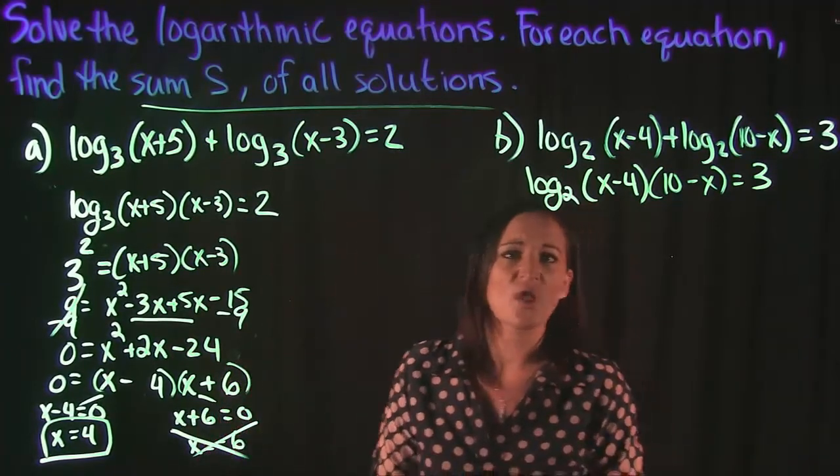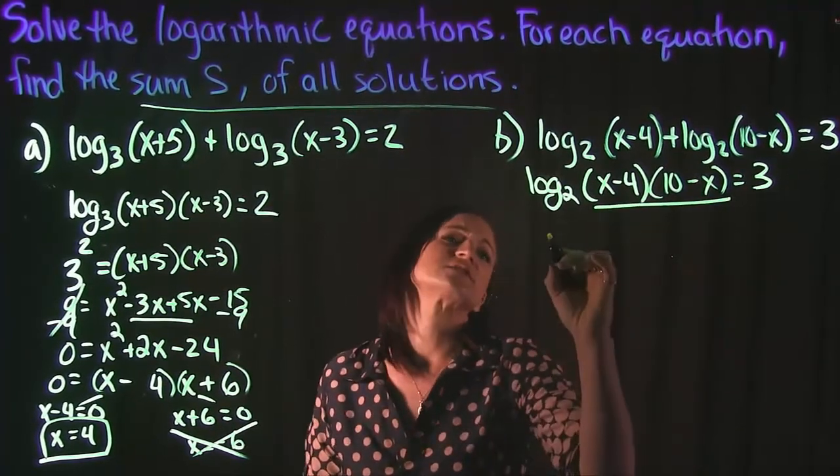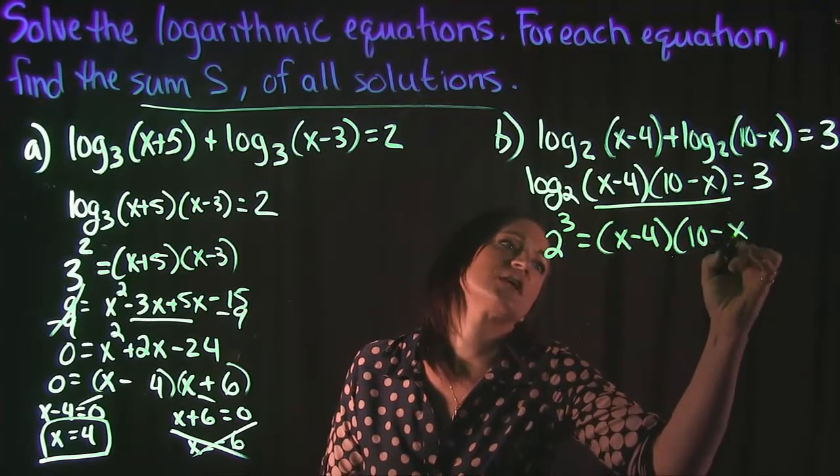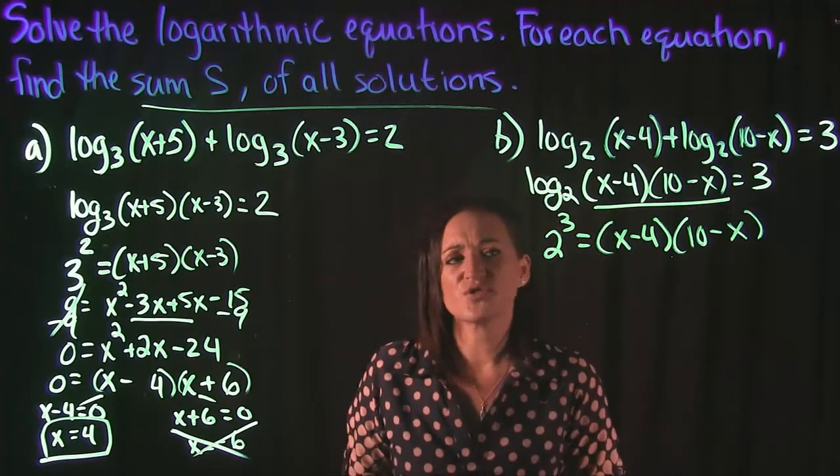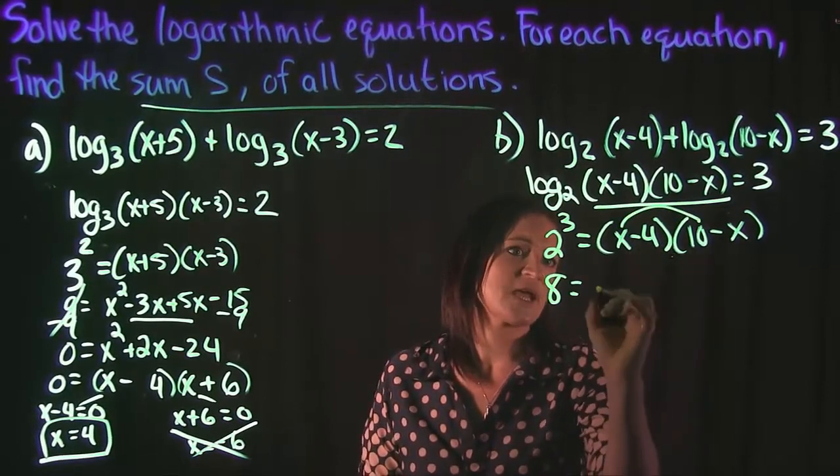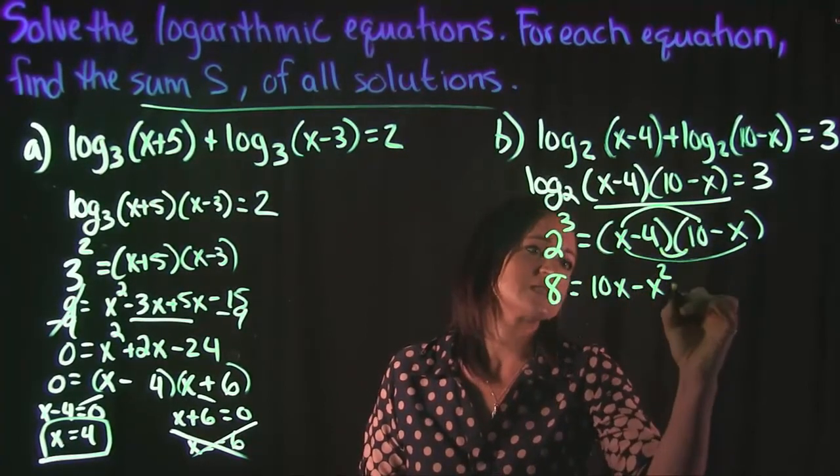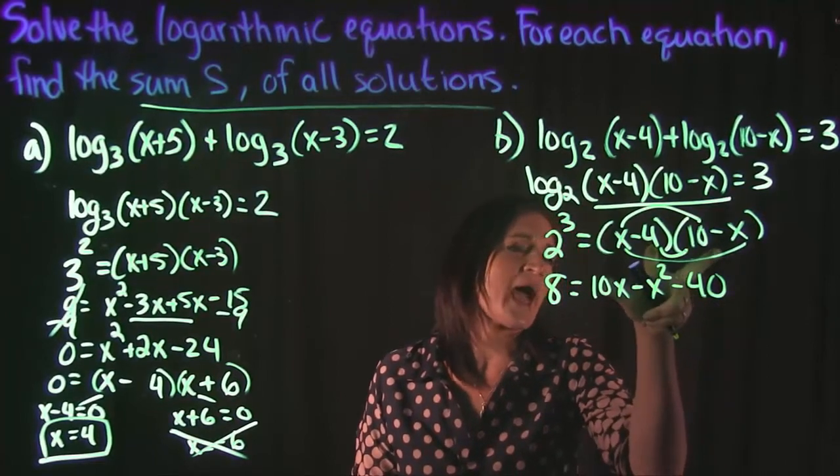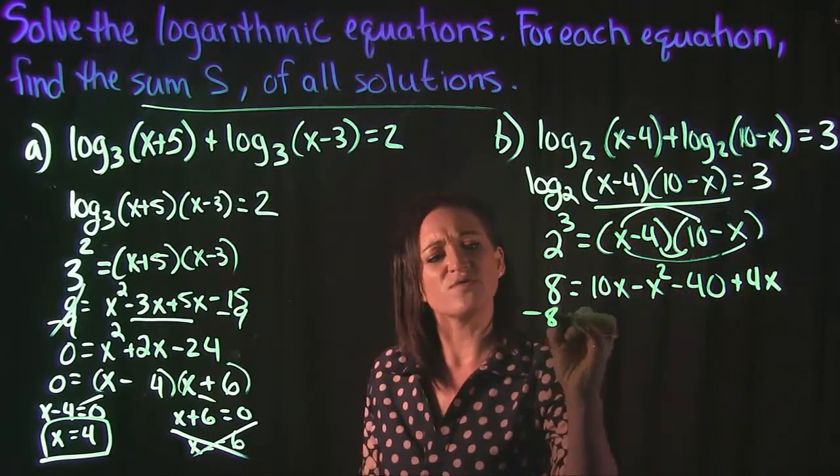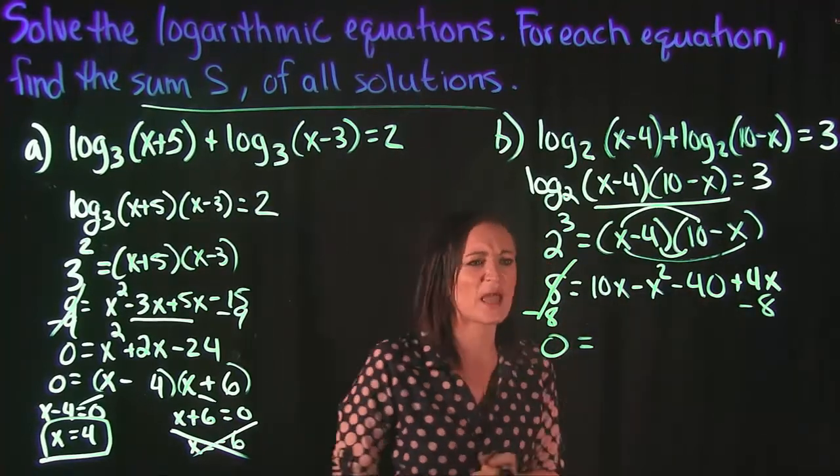I'm then going to use our other rule for logs that says I can take my base, raise it to the third power, and it's going to equal all of this. So 2 raised to the third power is equal to this multiplication, which is 8. Multiplying here using FOIL: x times 10 is 10x, outside gives me negative x times x which is negative x squared, inside gives me negative 40, and last, negative 4 times negative x is positive 4x.